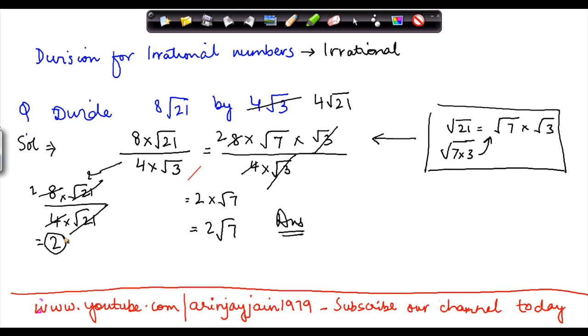Well, I am left with only 2. So therefore, division for irrational numbers could result in irrational or rational number. It can be both.